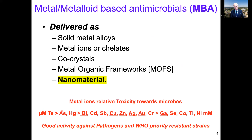If we think about the elements of the periodic table, which metals are more antimicrobial? At the micromolar level you have tellurium, arsenic, and mercury, and towards the millimolar scale you have several other elements. The underlined elements are those more popularly used — all are active against pathogens and WHO priority resistance strains.